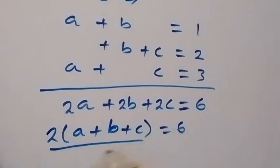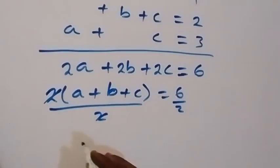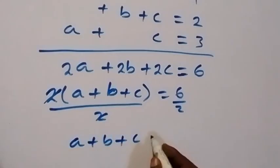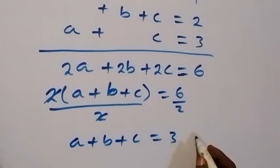Then we can divide both sides by 2 here. And this will cancel out. Then we have a plus b plus c to be equals to 3 from here. Let's label this as equation 4.